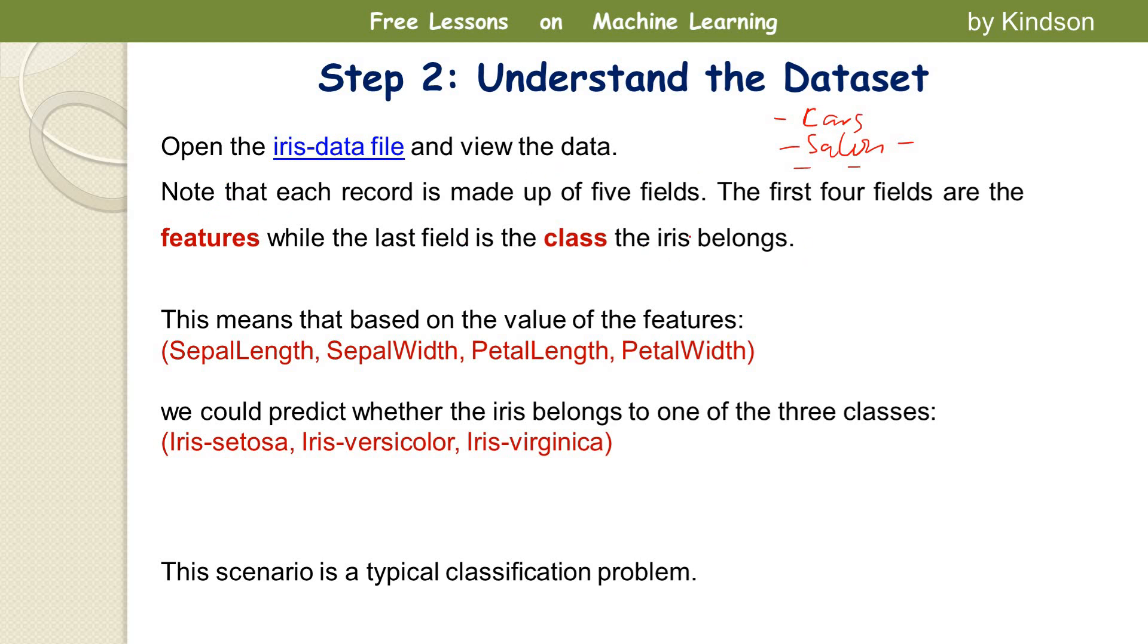In our case we have the iris dataset. I just like to show you how the dataset looks like in a tabular form. We have, let's say, length one, length two, width one, width two. So these are records, so they have attributes.